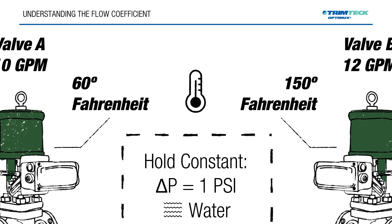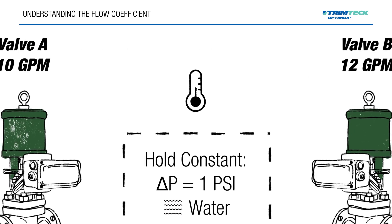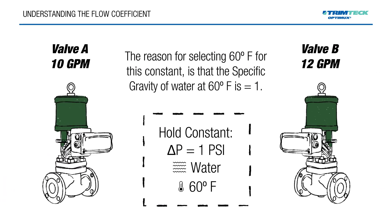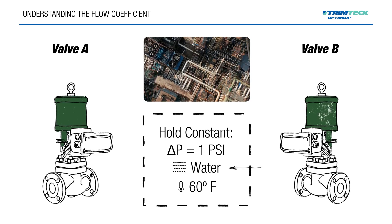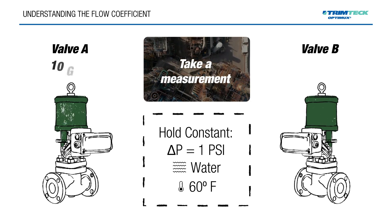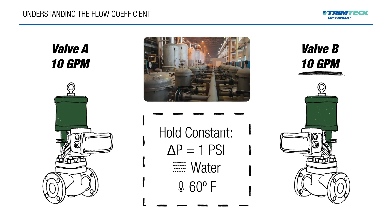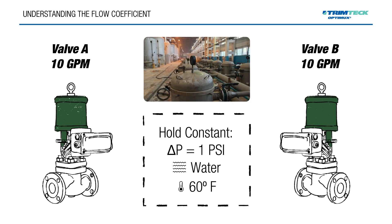Temperature also has an impact on flow — in this case, the higher the temperature of the water, the higher the flow rate. So we choose a temperature to hold constant. In all cases where CV is being measured, we select 60 degrees Fahrenheit. The reason for selecting this is that the specific gravity of water at 60 degrees Fahrenheit is 1, which makes the math much easier. Holding constant the 1 psi pressure drop, water as the fluid, and 60 degrees Fahrenheit, we take a measurement and find Valve A continuing to flow at 10 gallons per minute and Valve B now matching at 10 gallons per minute — which is the way it should be, as these are two identical valves of identical construction and trim size.